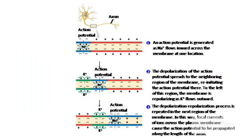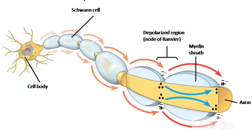Remember how our action potential traveled down an axon? That would be typical for most animals. But for more complex organisms like us, we have the myelin sheath. What happens is when the action potential travels down the axon, it doesn't go straight — it actually jumps from node to node. Because of the myelin sheath, it helps to speed up the action potential. The AP jumps between the nodes of Ranvier, and at the same time it doesn't lose its strength at all. This is one of the many factors that separate higher complex organisms from others.